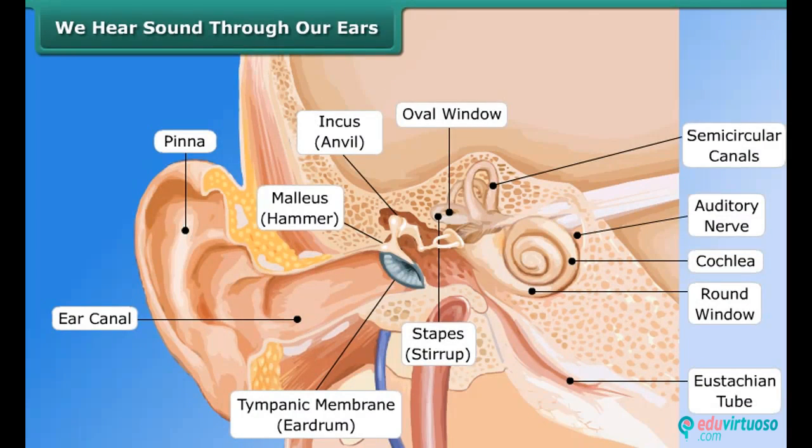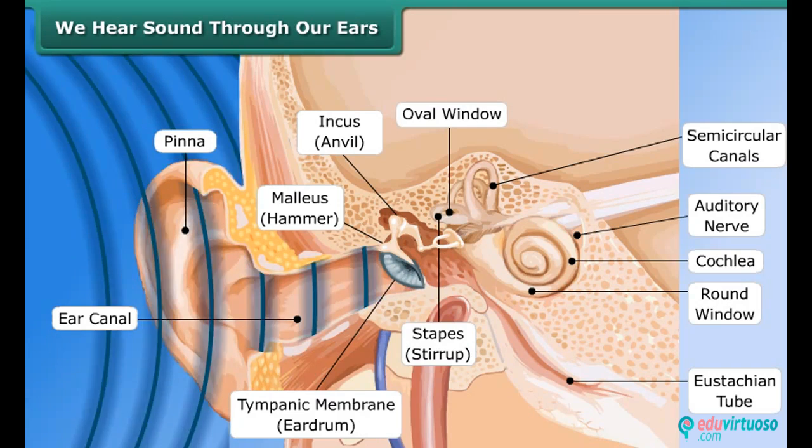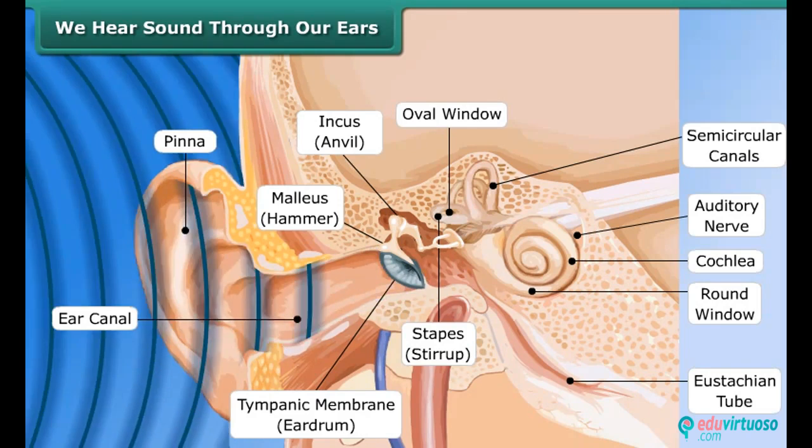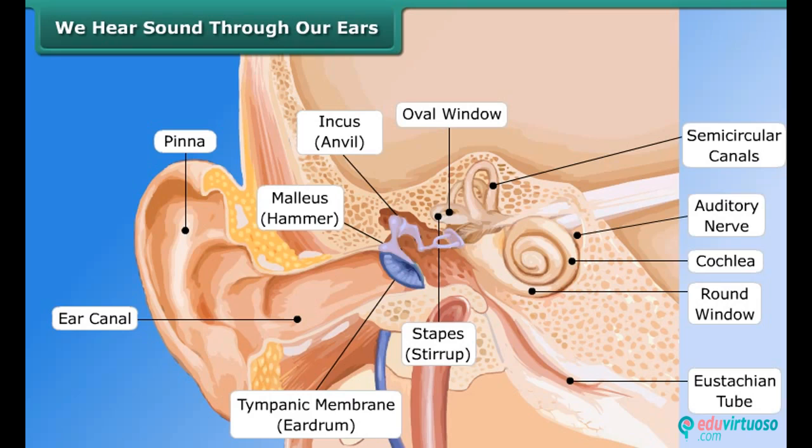We hear sound through our ears. The shape of the outer part of the ear is like a funnel. Sound enters and travels down a canal at the end of which a thin membrane is stretched tightly called eardrum. Sound vibrations make the eardrum vibrate and the eardrum sends vibrations to the inner ear and through inner ear it goes to the brain. This is how we hear sound.